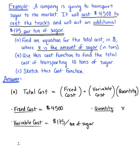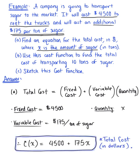We can say that therefore our total cost, our cost function c(x), is going to be equal to the fixed cost of $4,500 plus the variable cost of $175 multiplied by the amount of sugar we're transporting. So this is our solution for part A, which we're now going to use for part B.